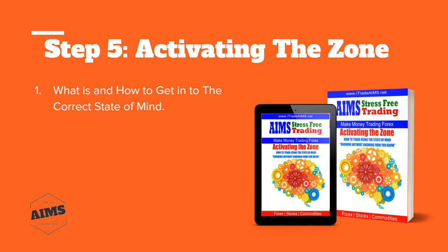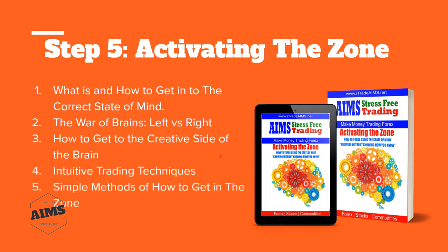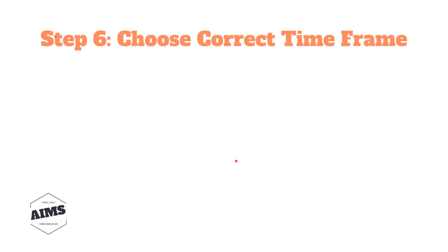We have an AIMS ebook, 'How to Remain Focused,' which you can download in the dashboard. Step five also covers how to get into the correct state of mind. We have the excellent ebook 'Activating the Zone,' which covers: what is the correct state of mind and how to get into it, the war of brains — left versus right brain, how to get to the creative side, intuitive trading techniques, simple methods to get in the zone, and peak performance trading. You can download it from the dashboard.